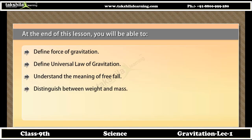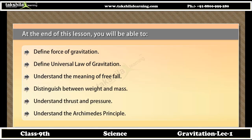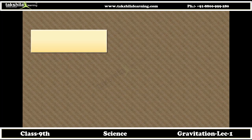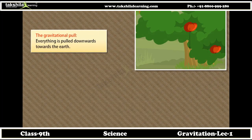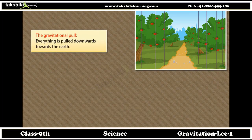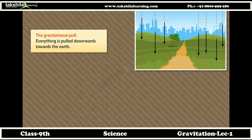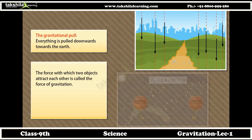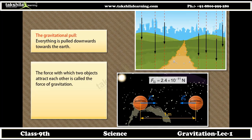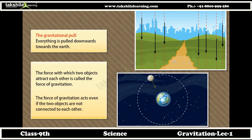Distinguish between weight and mass, understand thrust and pressure, and understand the Archimedes principle. The gravitational pull: everything is pulled downwards towards the earth. The force with which two objects attract each other is called the force of gravitation. The force of gravitation acts even if the two objects are not connected to each other.